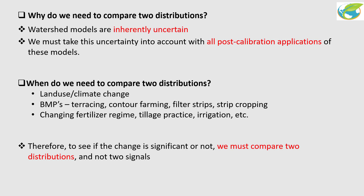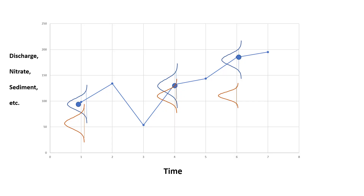To see if the changes are significant or not, you need to compare two distributions. You have time here — for us time is always the observations. You have made some observations and then you calibrate your model. Around each observation point you have a distribution because you made three to five hundred simulations. From those simulations we calculate the distribution, and from the distribution we get the 95 PPU. So every observation point is associated with a distribution of simulations.